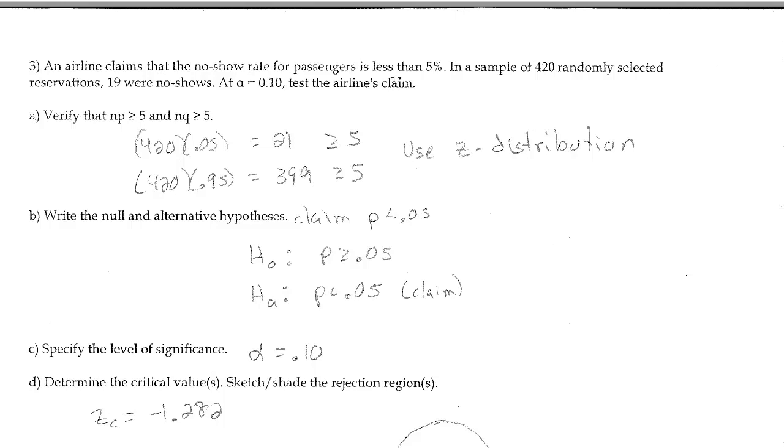We can see in this example that we have calculated that. They're both greater than or equal to 5, so the standard distribution will approximate the binomial distribution.